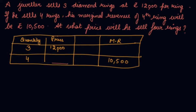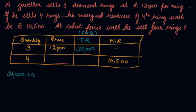We can find out the total revenue for 3 units: price into quantity gives total revenue, which means 36,000. Marginal revenue is the addition to successive units, meaning TR(n) minus TR(n-1). So if you add MR to TR(n-1) you will get TR(n). So 36,000 plus 10,500.